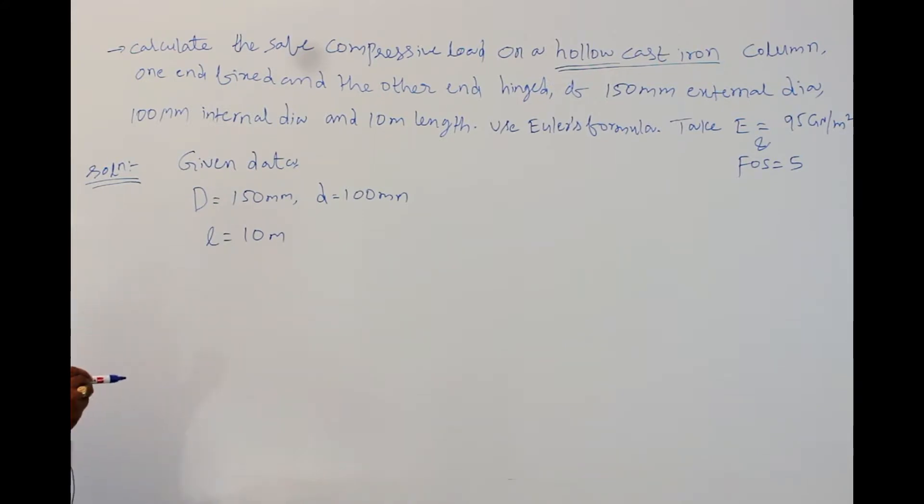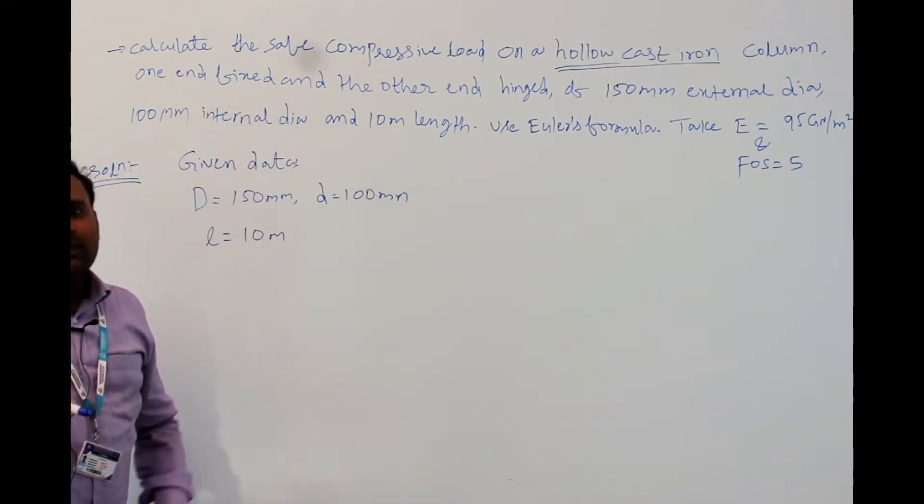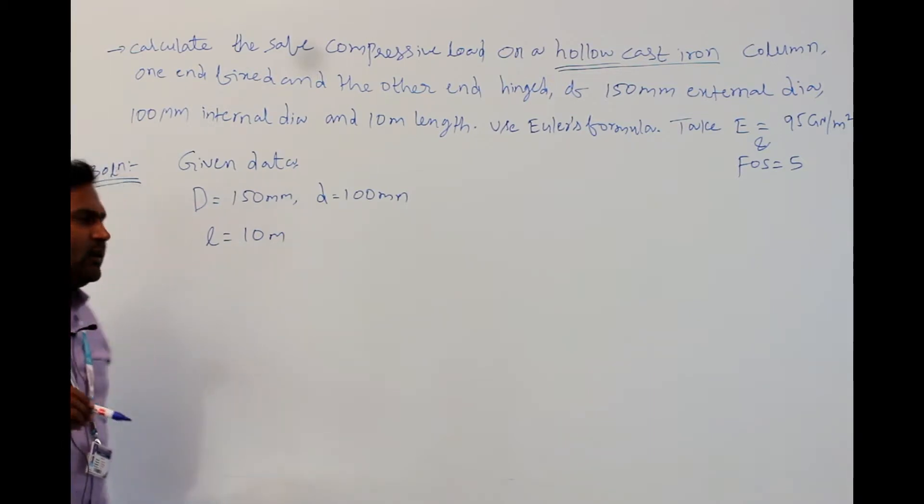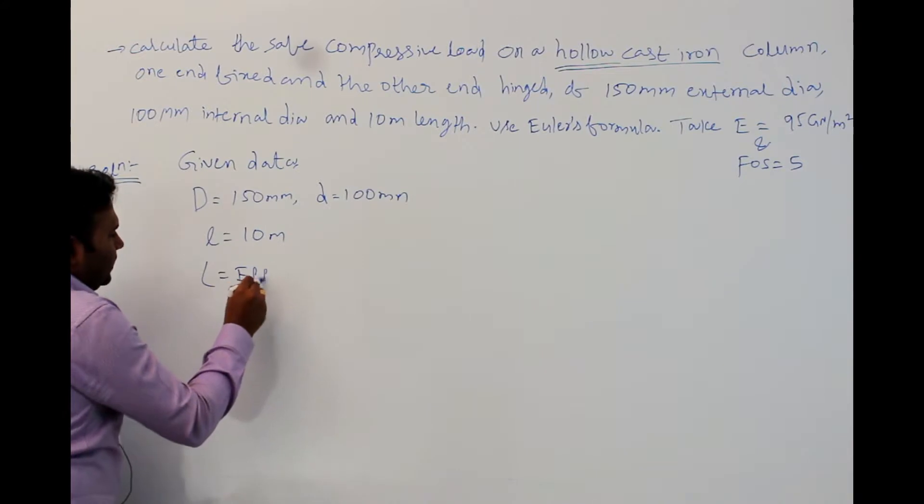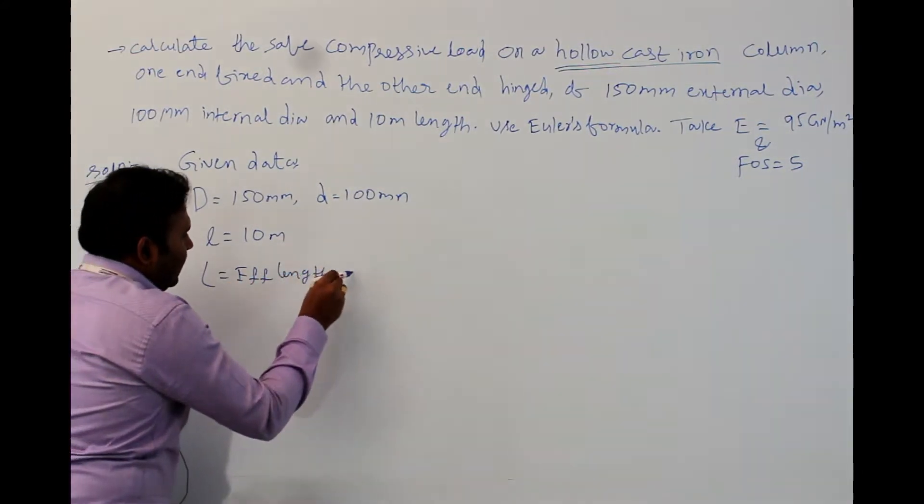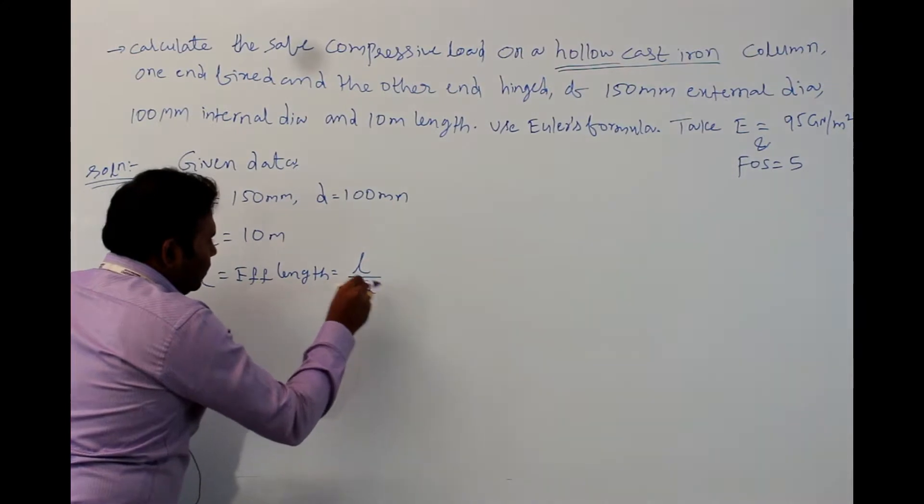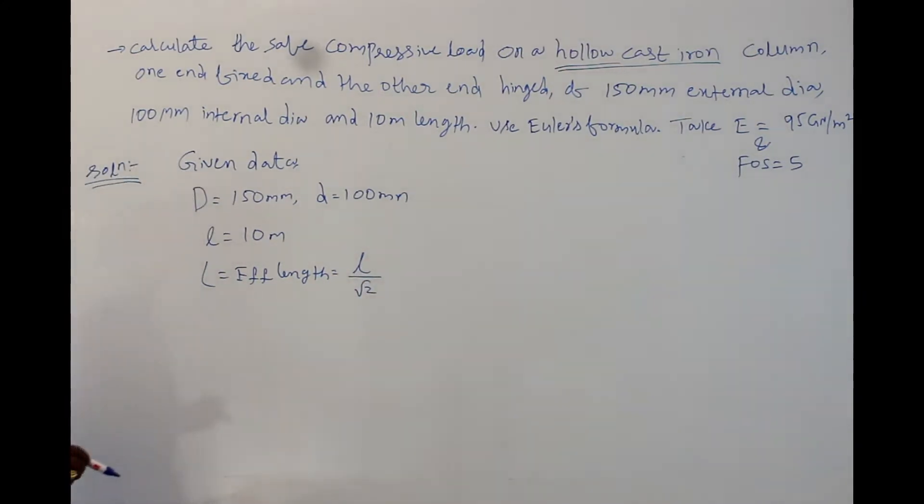Here the end conditions are also given. One end is fixed and the other end is hinged. So, when one end is fixed and the other end is hinged, we have a formula for calculating effective length. Effective length can be calculated by using the formula actual length by root 2.